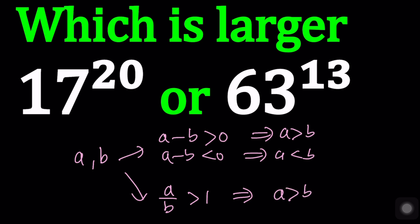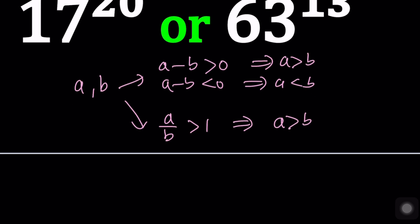Or the second method is by quotient — by dividing. If you divide a by b and get an answer greater than 1, that means a is greater than b. Or if a over b is less than 1 — like a fraction, like 1 third or 2 thirds — that means a is less than b. This is only true for positive numbers.